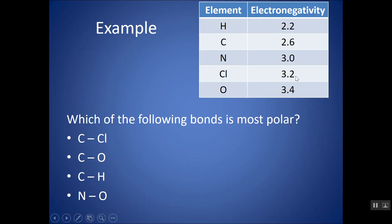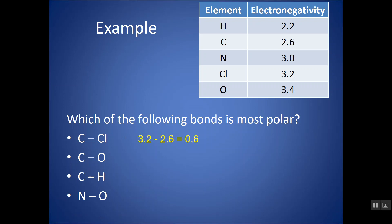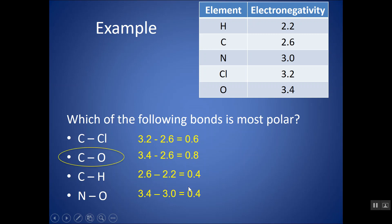Now I'm giving you electronegativity values. Which of the following is most polar? To find out, calculate the difference for each bond. You want the absolute value of the difference — it doesn't matter which atom is listed first; just subtract the higher number minus the lower number, or take the absolute value. The most polar bond would be the one with the greatest electronegativity difference; the least polar would be the lowest difference.